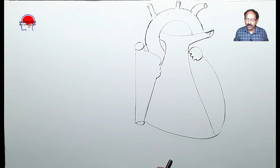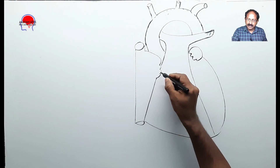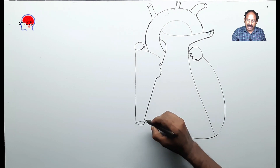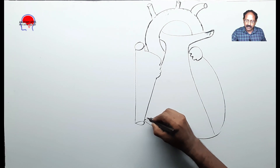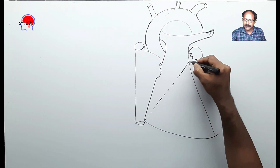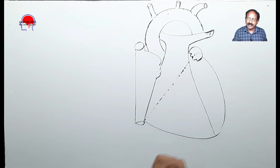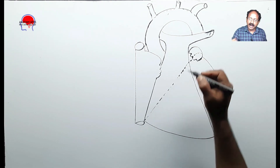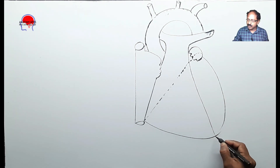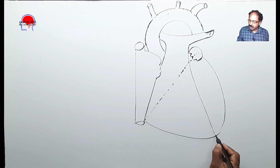This is the anterior view of the heart. You can note that this is the coronary sulcus — the coronary sulcus actually turns to the posterior aspect, which you can draw as a dotted line, and it finally ends here. This represents the coronary sulcus in the posterior aspect. Here is the anterior interventricular groove, which runs close to the apex of the heart.